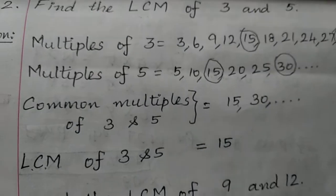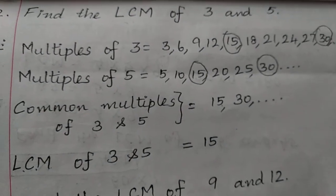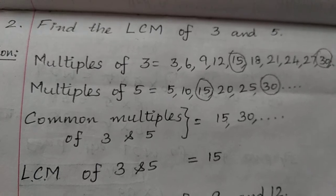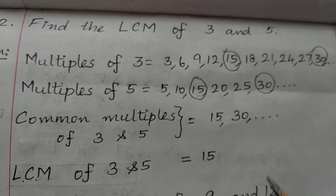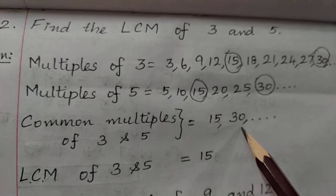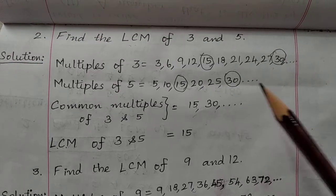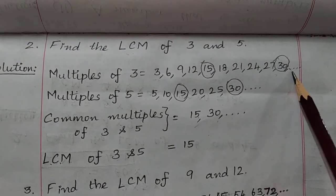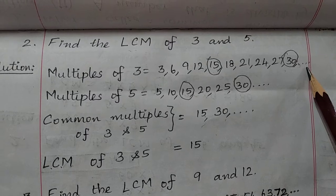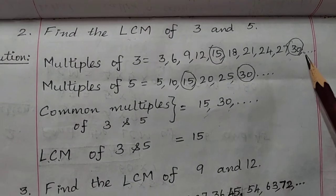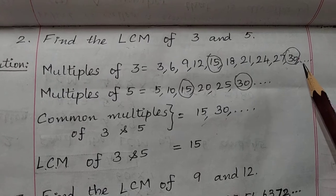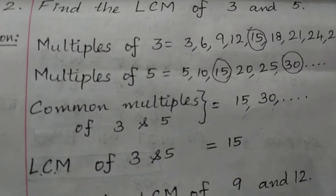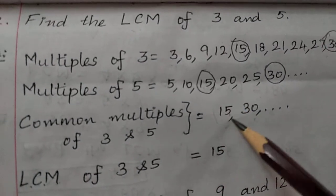You can write as many common multiples as you need. You should not put a full stop while finding multiples — multiples can be found out indefinitely, so put 'etc.' So the LCM of 3 and 5 is the smallest common multiple, which is 15.